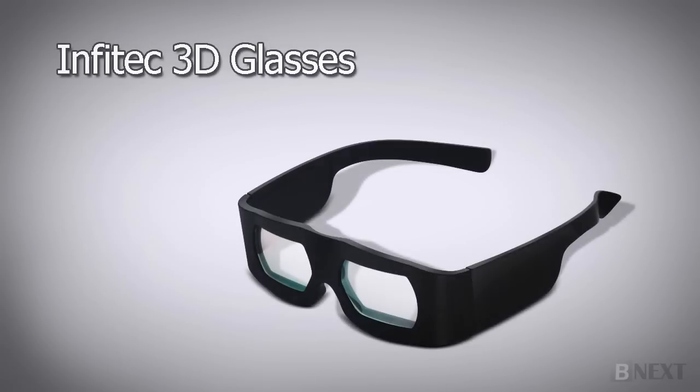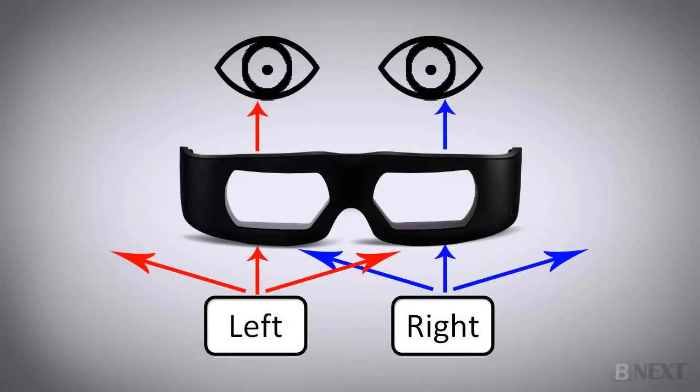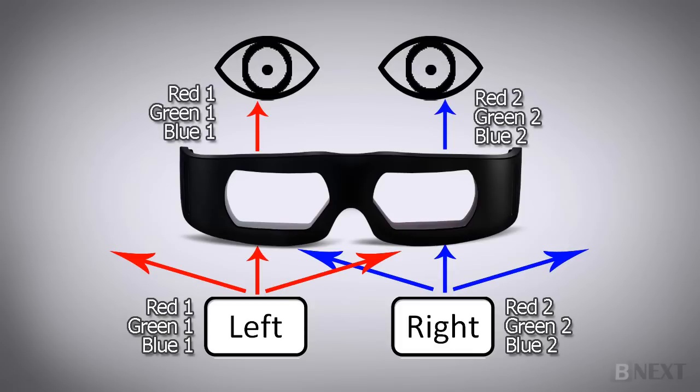Infitech 3D glasses are actually an upgrade of the Anaglyph 3D glasses and are sometimes called super-anaglyph glasses. Each image for each eye is encoded with slightly different red, green, and blue colors. The differences are so slight that our brain hardly notices them, but they are strong enough to be filtered by the glasses' lenses, and each slightly different image is filtered to the intended eye.